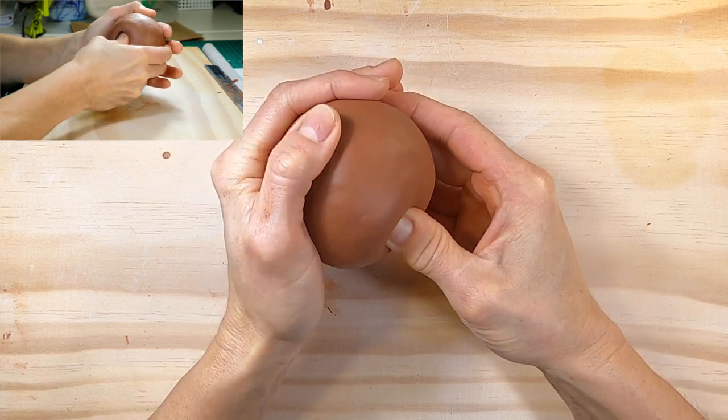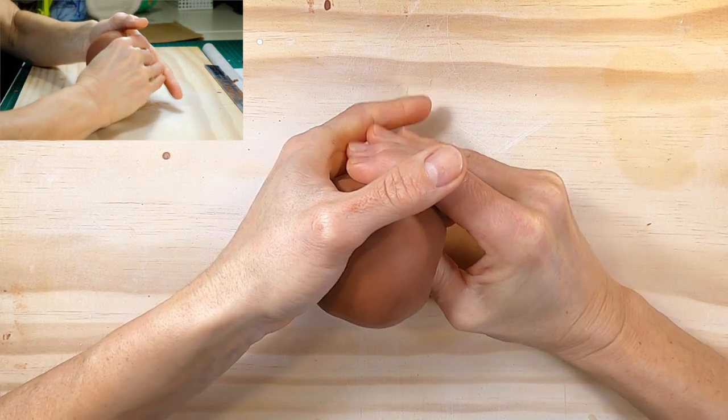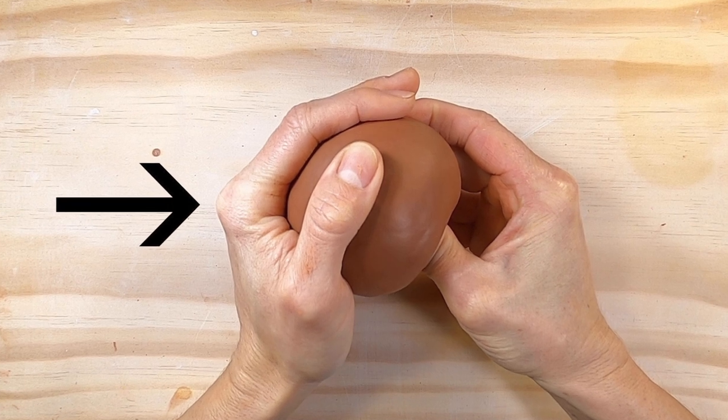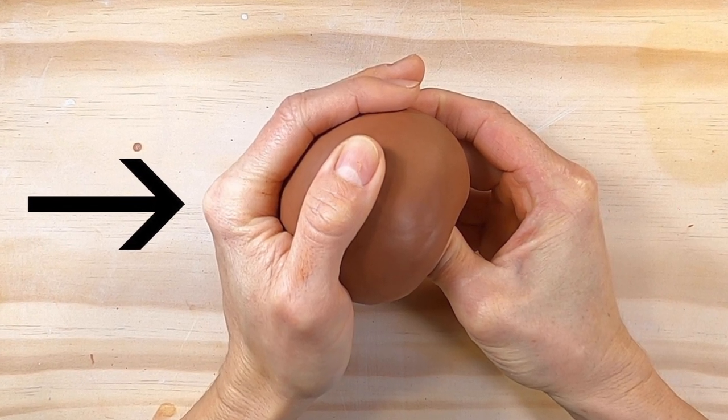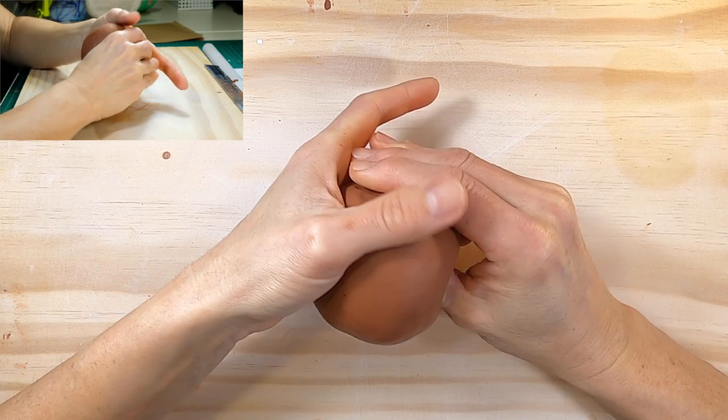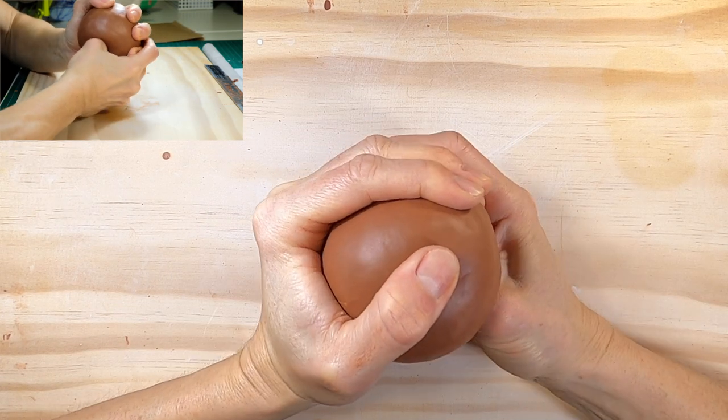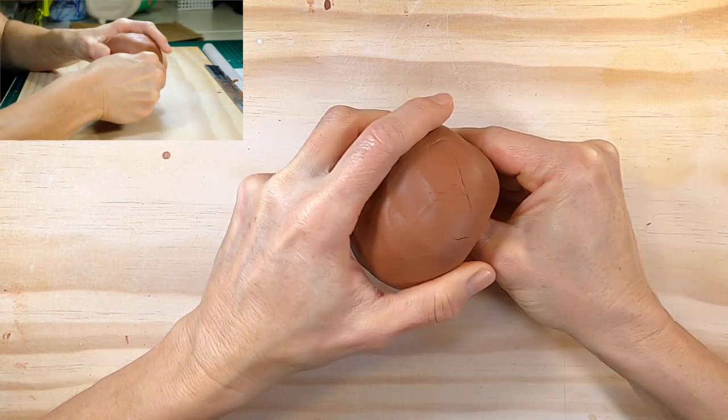Push your thumb into the centre of the ball. Notice how my left hand is cupping around the ball. This is so it keeps its rounded shape. Don't push your thumb all the way through to the other side. Stop about 15mm or half an inch before the bottom.